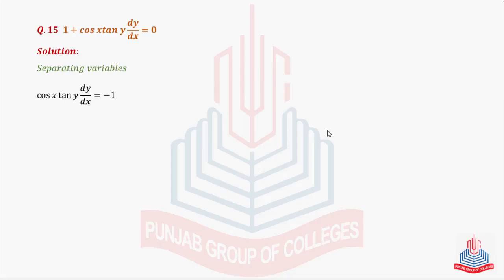Plus 1 was on the left side; after shifting to the right side it will become minus 1. Ab hum dy aur y variables ek taraf rakhte hain aur dx and variable of x ek taraf kar dete hain. So tan y and dy will remain on the left hand side, and minus 1 — cos x divide hoga, dx right side par aakar multiply ho gaya.